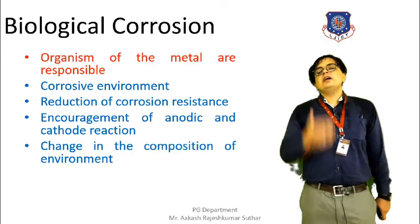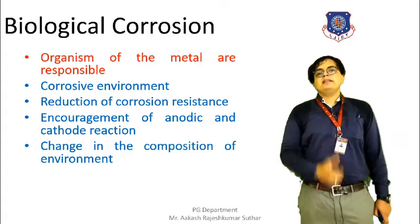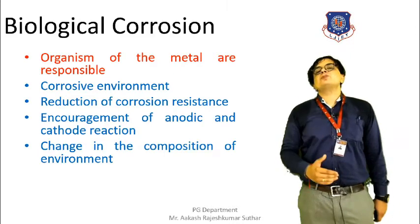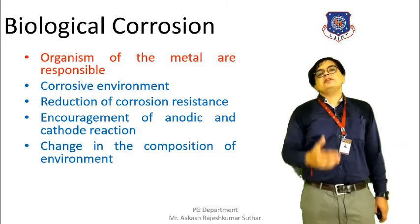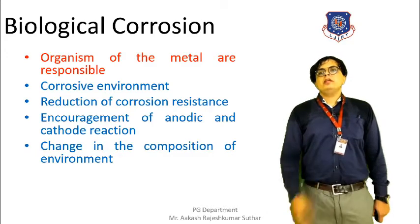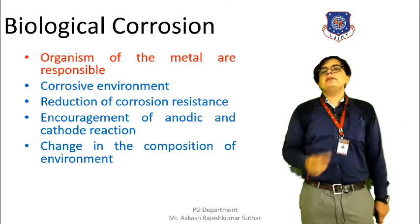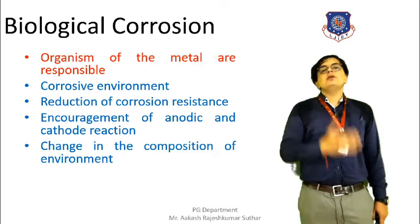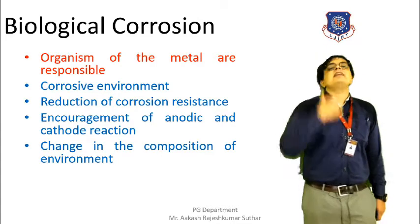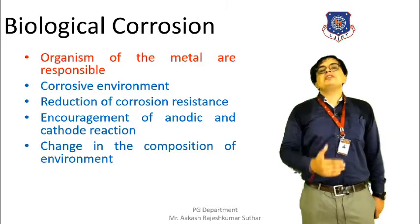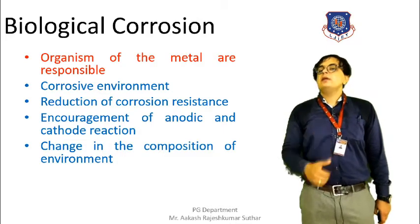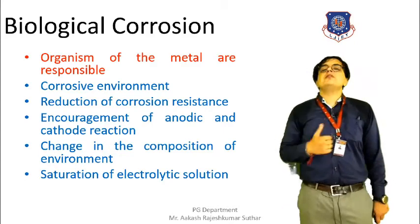Another condition is a change in the composition of the environment. If the environment in which the metal is exposed undergoes a change in composition, it can cause biological corrosion. For example, if a toxic gas released from factories comes into contact with that metal, a condition of corrosion is set and biological corrosion can take place.